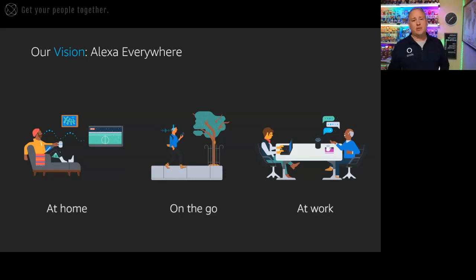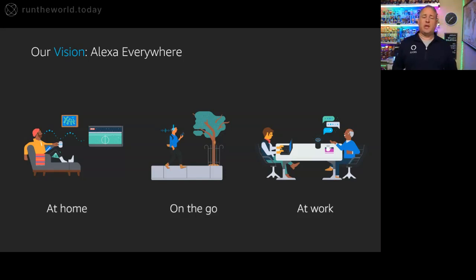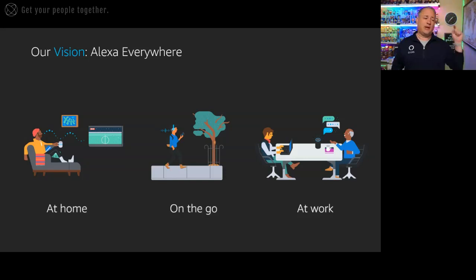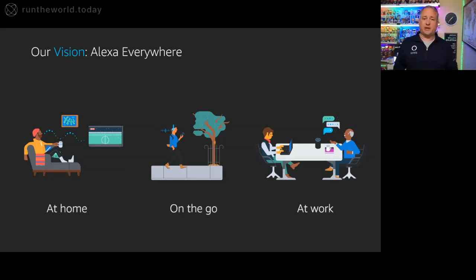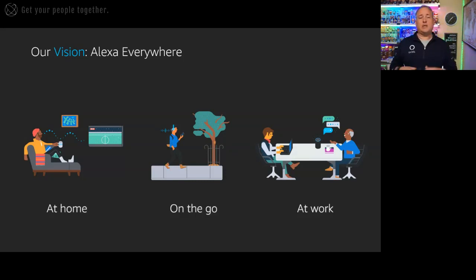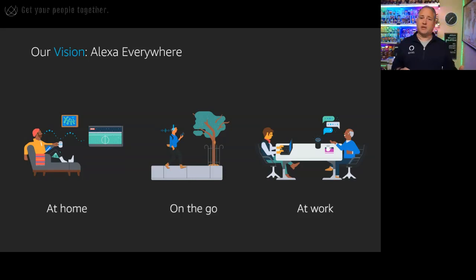Another good example is at work — being able to send messages to people, being able to book a conference room just by walking into the conference room and saying, 'Alexa, book this room for three o'clock.' You can do those kinds of things with these devices in the right places, but it's about the services. It's about the cloud and it's about AI. And that's really where a lot of this comes in together.